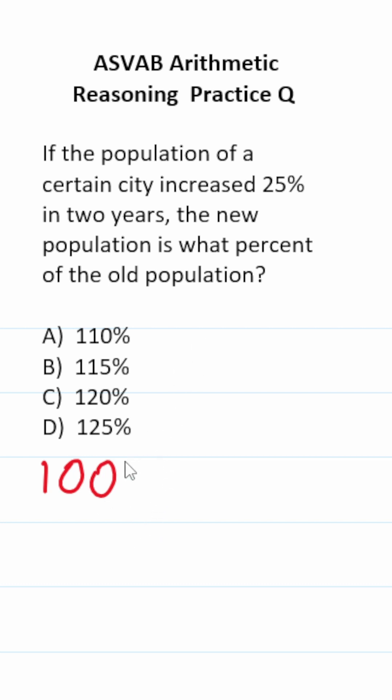According to the problem, the population increased by 25%. What is a 25% increase of 100? Well, 25% of 100 is 25. Of course, 100 plus 25 is 125.